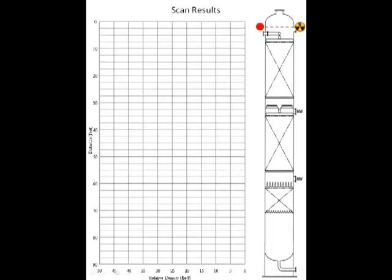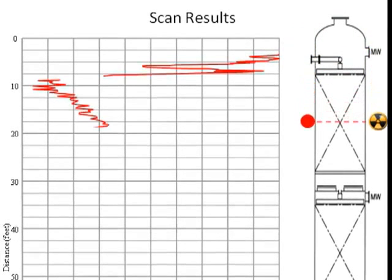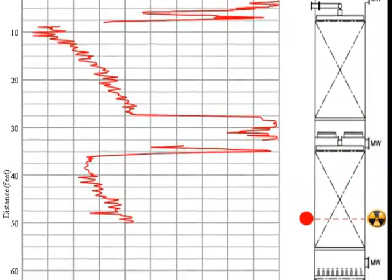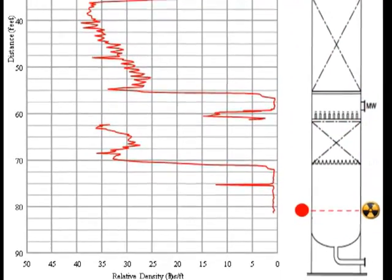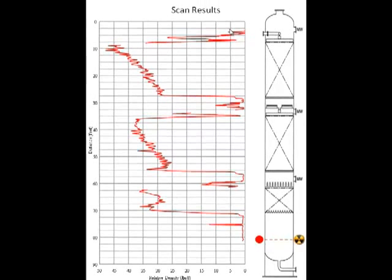The gamma scan started at the top tangent line, and the radioactive source and detector were lowered simultaneously down the tower through each of the three packed beds. This produced a density profile or gamma scan profile that's reproduced on the left.